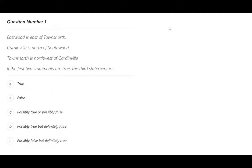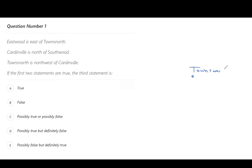So let's draw a little picture for this one to help us out. So it says eastward is east of towns north. So that means if towns north is here, eastward would be east which would be over here. So remember you're north, south, east and west.